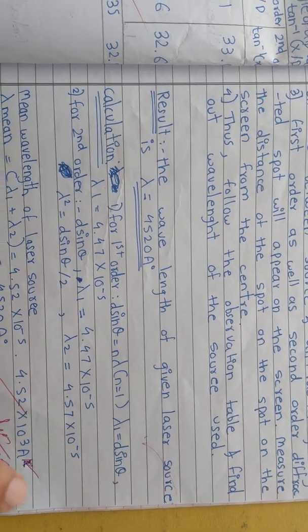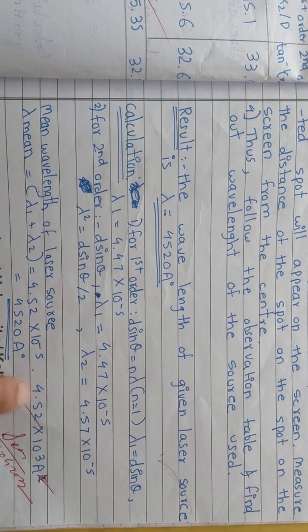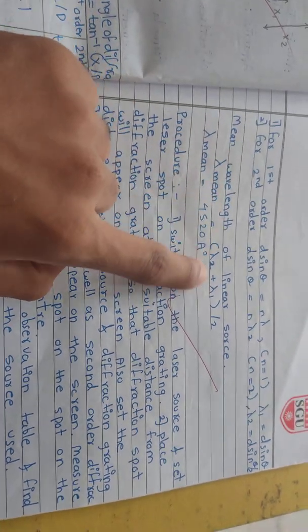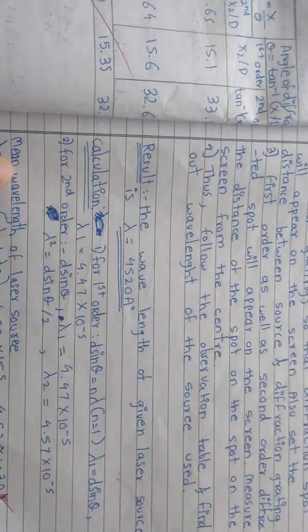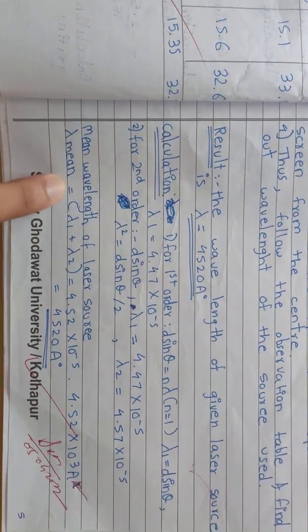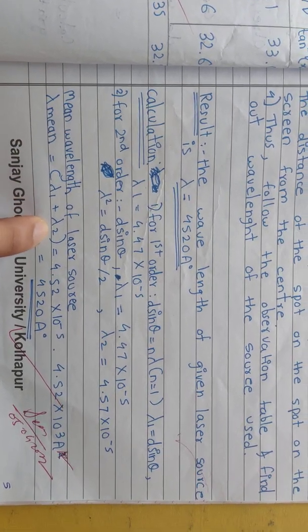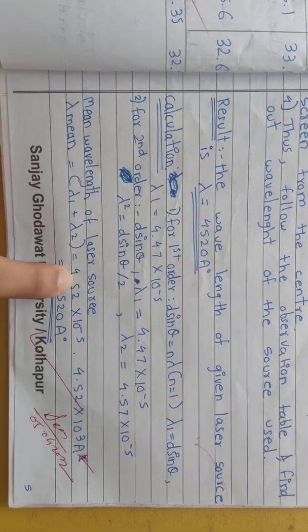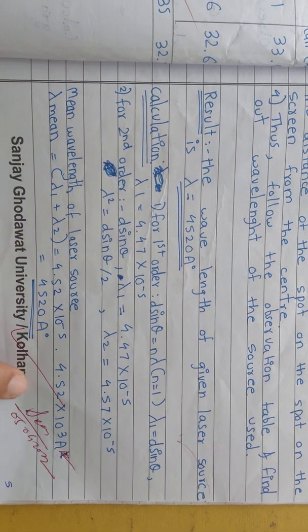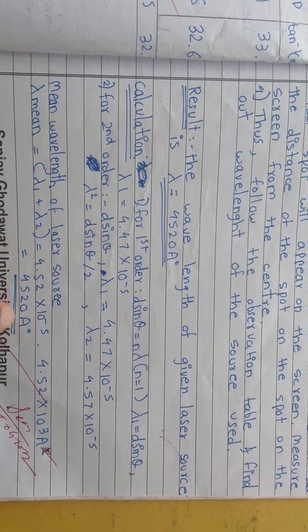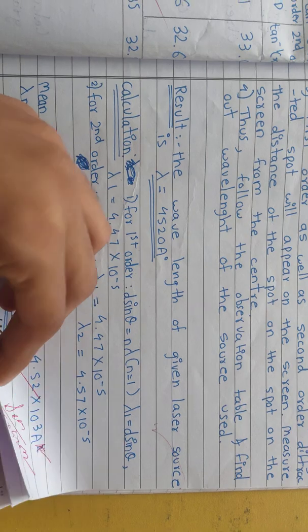The formula we have to use: mean wavelength of laser source, lambda mean equals lambda 1 plus lambda 2, which equals 4520 angstrom. This is our experiment, this is the diagram.